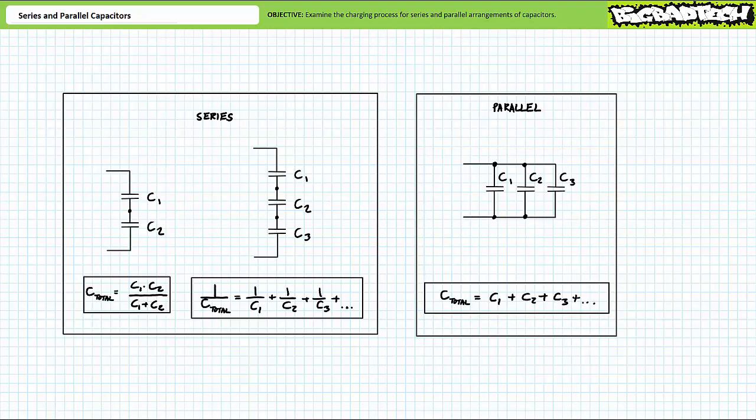Lumping a series or parallel arrangement of capacitors into a single total capacitance is an effective yet kind of superficial means of circuit analysis. Today we'll look at the dirty details of the individual capacitors making up the total capacitance.